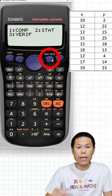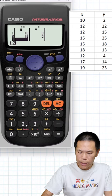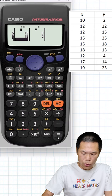Press setup and go to statistics mode, that is option two, so just press two. Enter 10, equal, 12, equal, 12 again, equal, 15, equal, 15, equal, 18, equal, 12, equal, 17, equal, and 19.